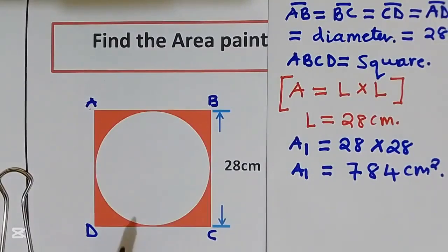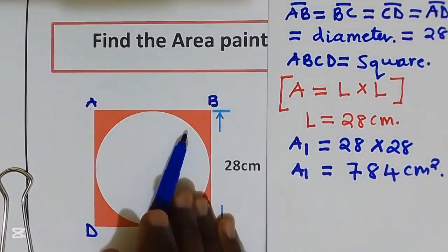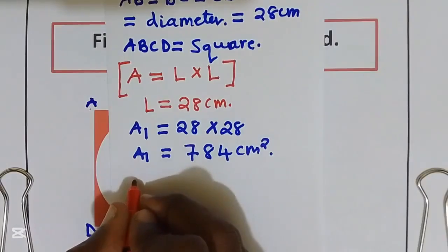Now let's find the area of the circle. The diameter of the circle is 28. Let area 2 be the area of the circle. That is given by Pi R square.